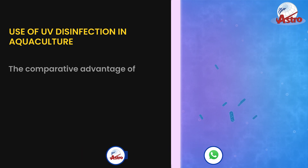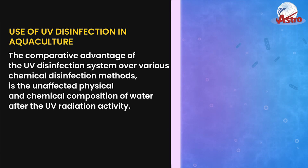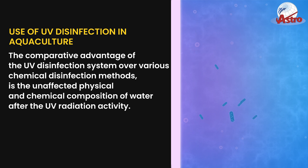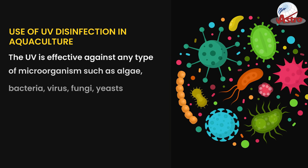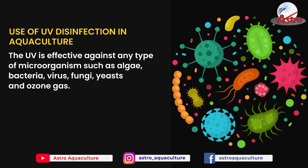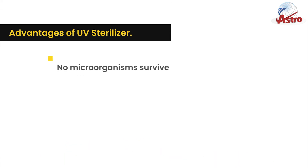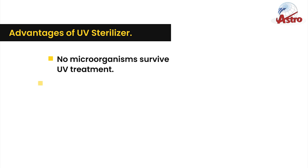The comparative advantage of the UV disinfection system over various chemical disinfection methods is the unaffected physical and chemical composition of water after UV radiation activity. UV is effective against any type of microorganism, such as algae, bacteria, viruses, fungi, yeasts, and ozone gas.